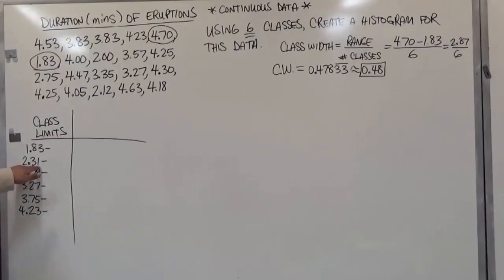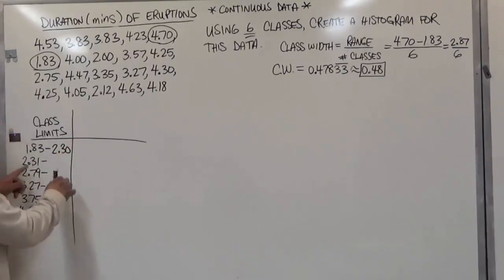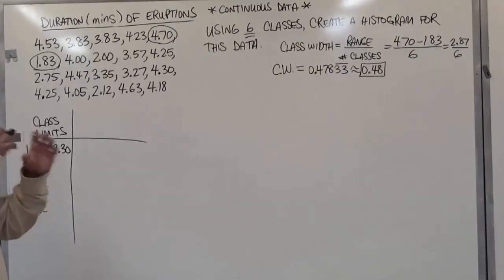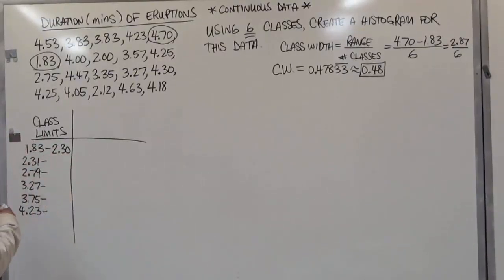So we're going to just go back one position in the hundredth place of this number and place it up here. So even though the difference between these two numbers is actually 0.47, from 1.83 to 2.30 encompasses a class width of 0.48. And again, we're going to add these same numbers going downwards.